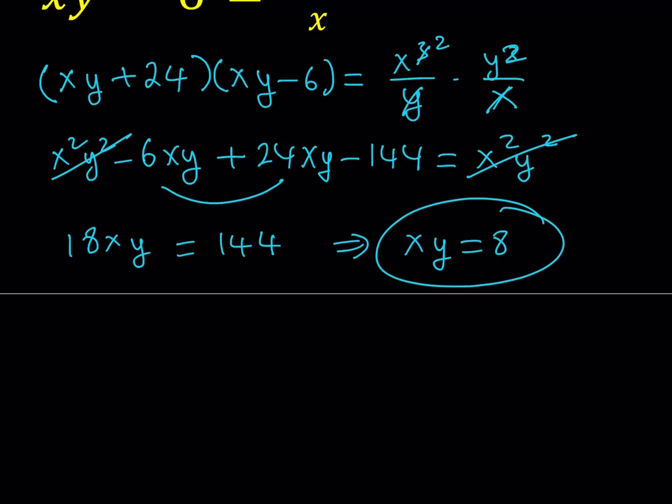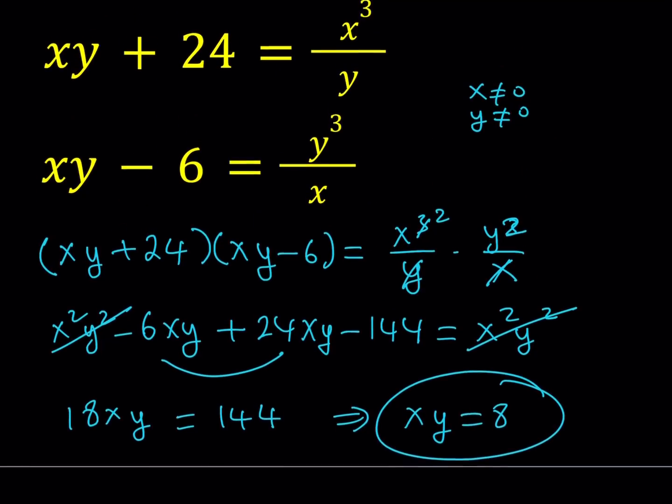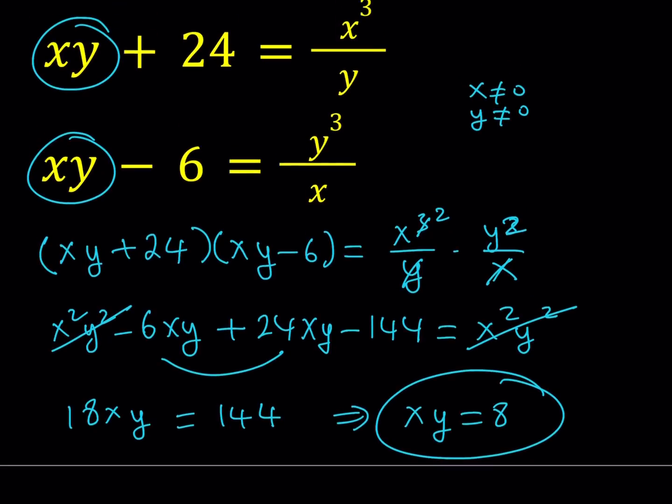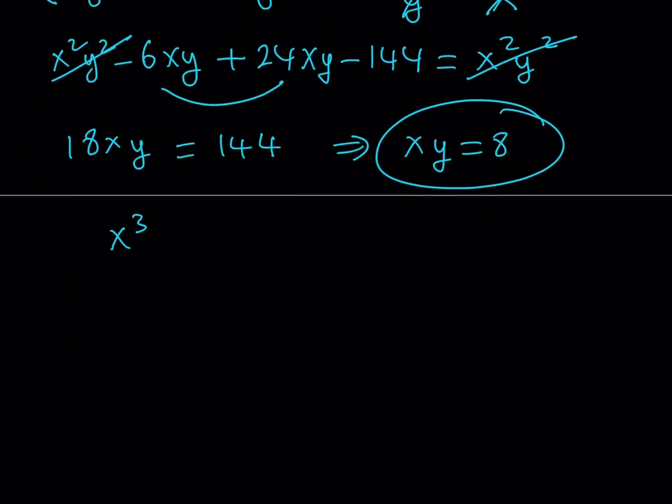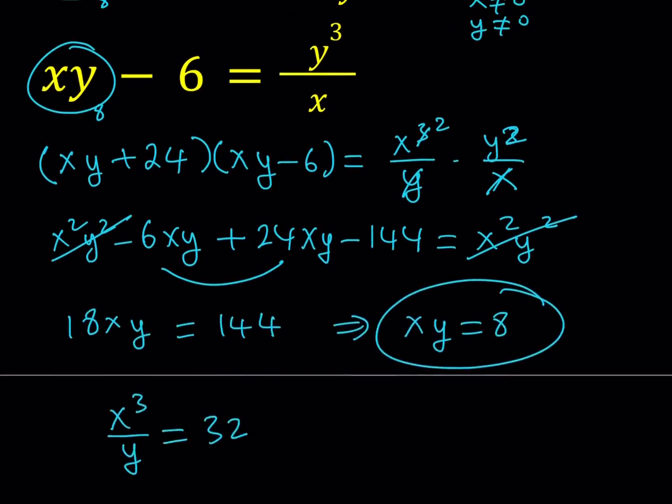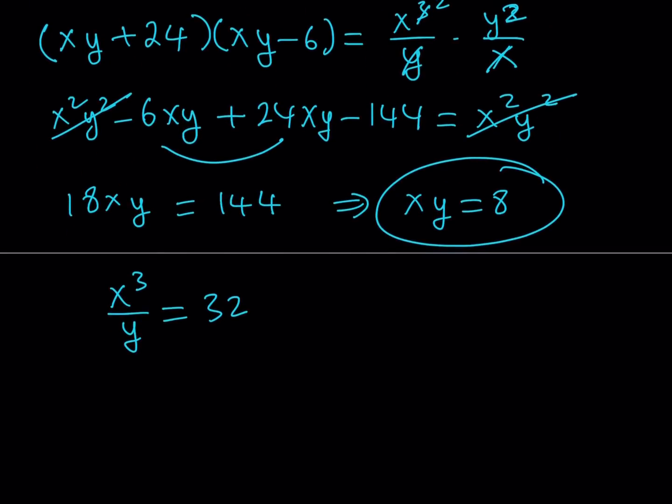Okay, now I got the value of xy, so what I can do is I can actually go ahead and substitute into both of these equations. If you substitute xy equals 8 into the first equation, you should be getting 8 plus 24 here, and 8 minus 6 here. x cubed over y is going to give you 32, and from the second one, y cubed over x equals 2.